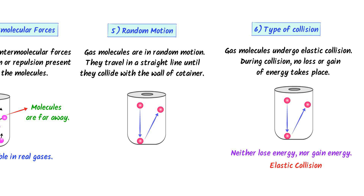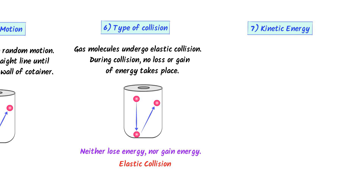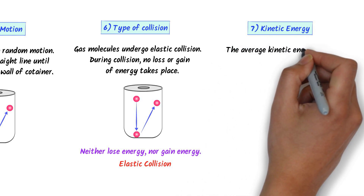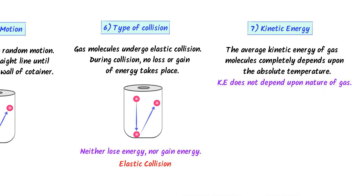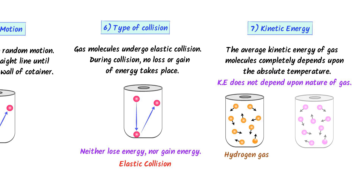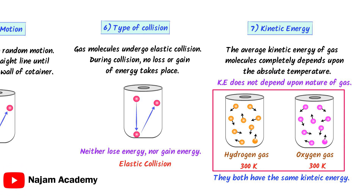The seventh postulate of the Kinetic Molecular Theory of Gases is about the kinetic energy of molecules. It states that the average kinetic energy of the gas molecules depends completely upon the absolute temperature. Remember that the kinetic energy of a gas molecule does not depend upon the nature of the gas. For example, 1 mol of hydrogen gas and 1 mol of oxygen gas at 300 Kelvin have the same kinetic energy, because they are both at the same temperature.